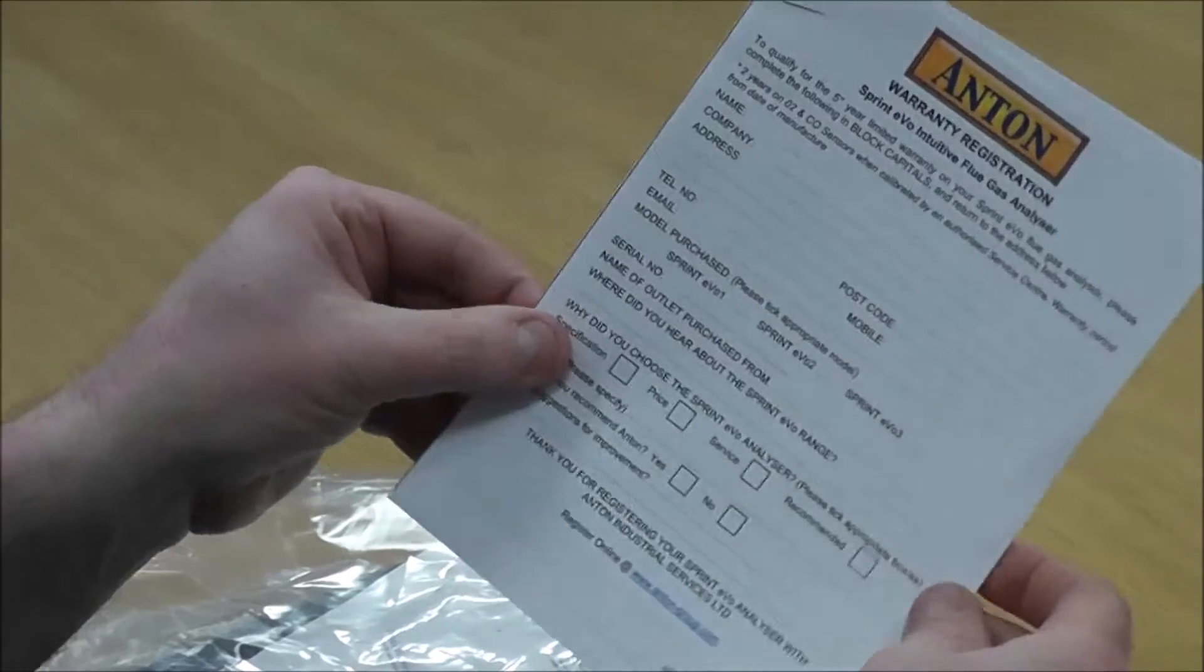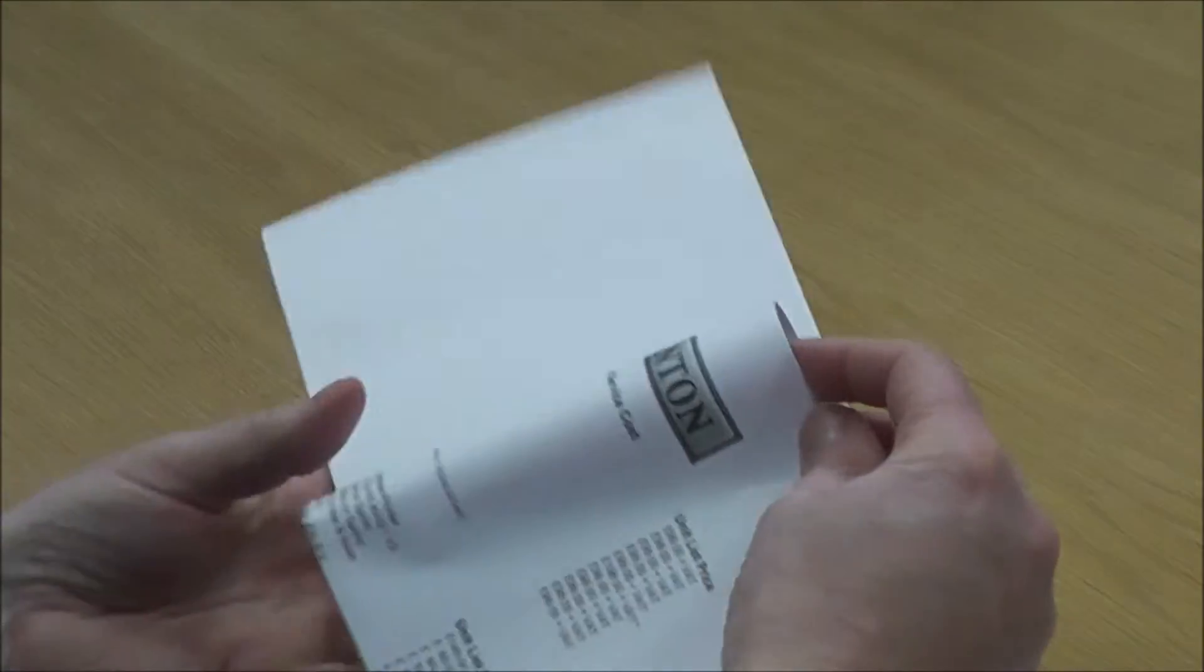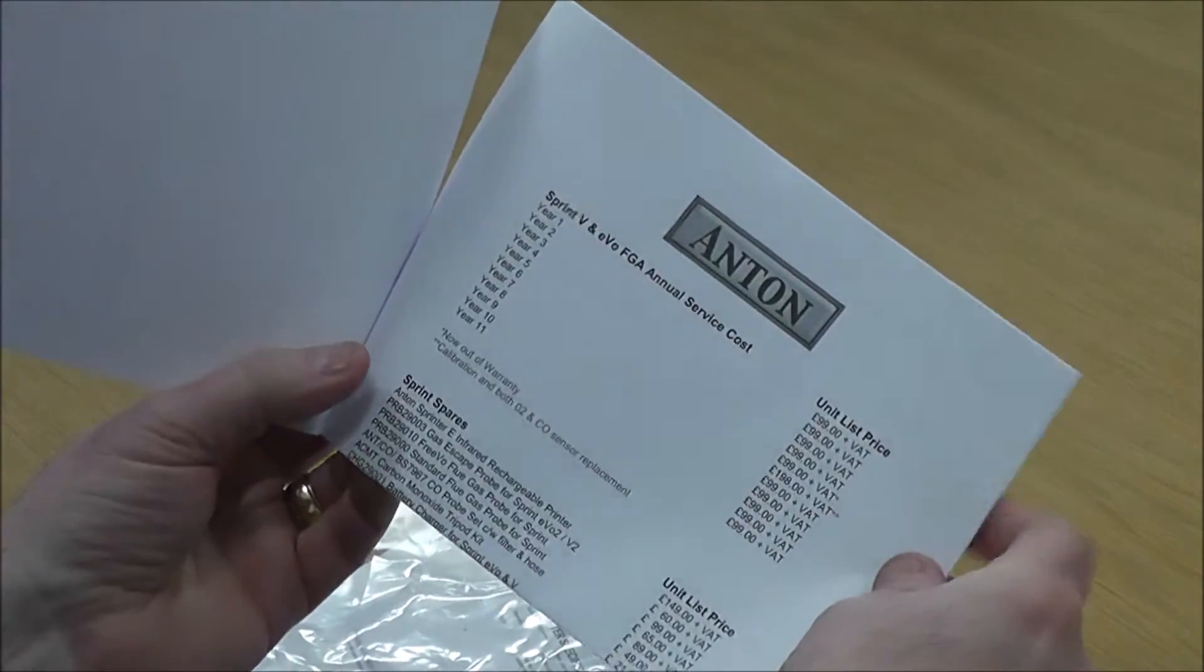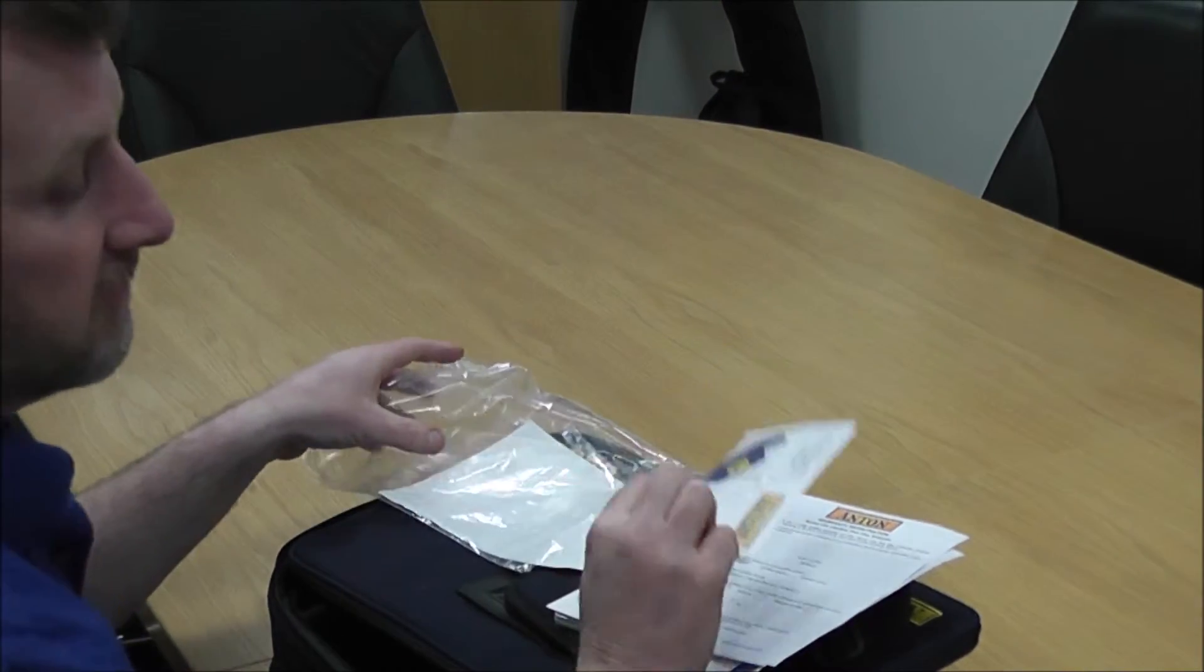You have your warranty registration form, and on the back is all the pricing for your ongoing annual service costs and any accessories you might need to purchase. You've also got your instruction manual for your printer.